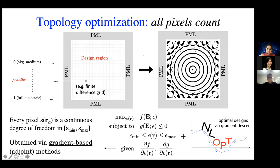The most popular form of this approach is known as topology optimization. The idea is to maximize some objective function — for instance, to confine or guide light from one point to another — where this function depends on Maxwell's equations, specifically the permittivity of the structures in the system and the resulting electric fields.